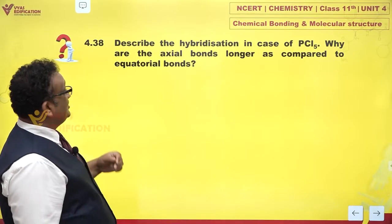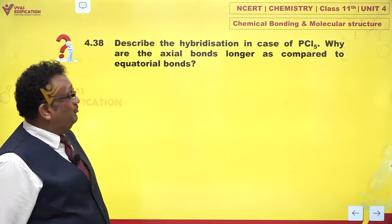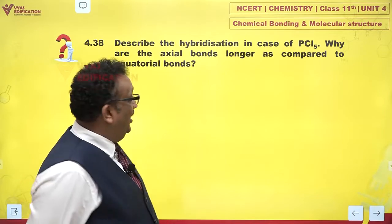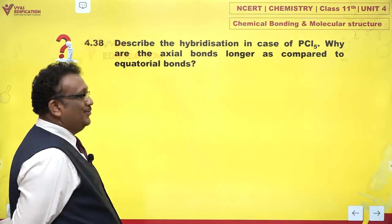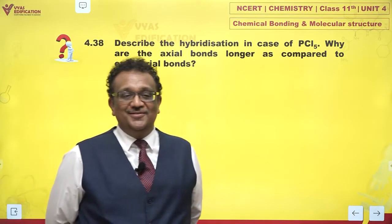Let's take this question. It says: describe the hybridization in case of PCl5, and why are the axial bonds longer as compared to the equatorial bonds?